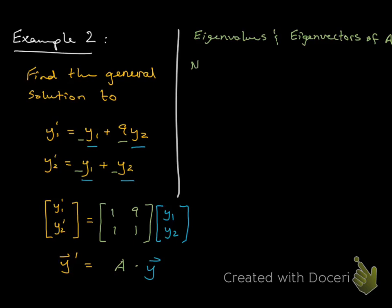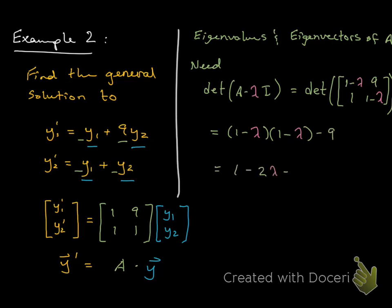We need to find the determinant of A - λI. For us, that's the determinant of [1-λ, 9; 1, 1-λ]. Since this is a 2x2, we can calculate the determinant pretty quickly. What we should get is (1-λ)(1-λ) - 9 = 0. When I FOIL, I get 1 - 2λ + λ² - 9 = λ² - 2λ - 8. I set that equal to 0 and solve.